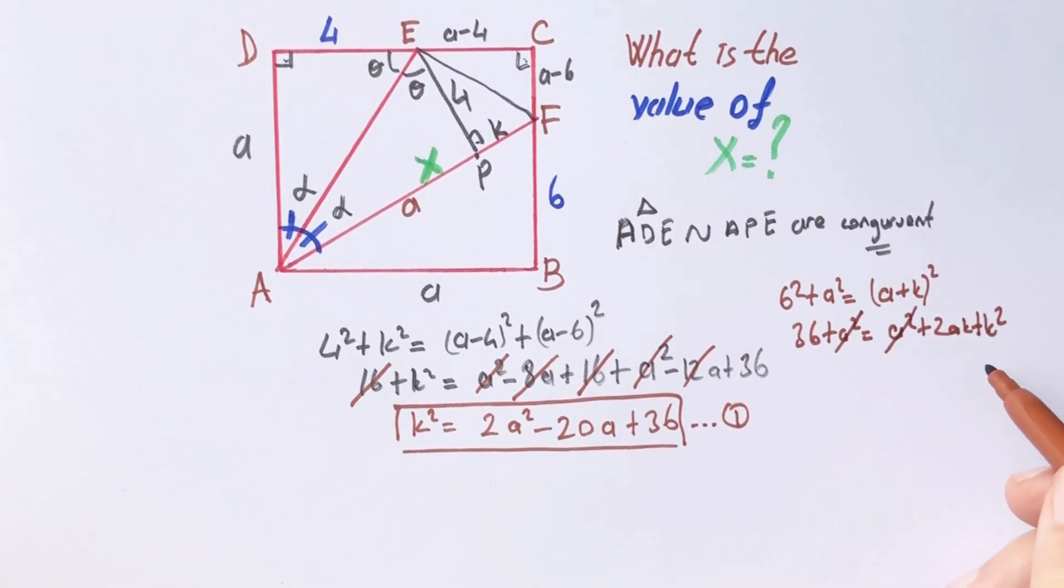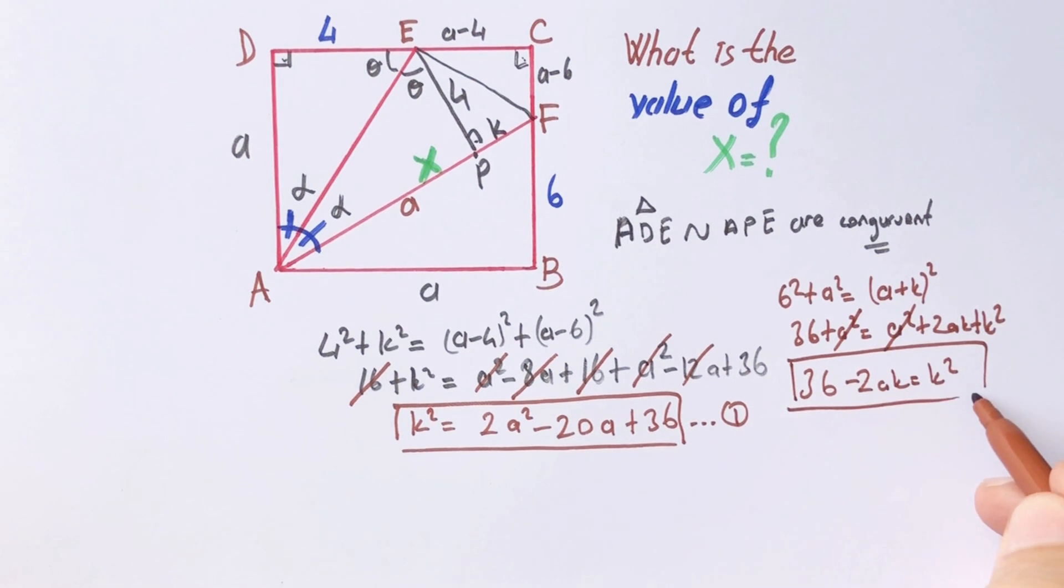A squared, they are gone. K squared equal 36 minus 2ak. This is the second equation. If we equalize these two equations, 2a squared minus 20a plus 36 equal 36 minus 2ak. These are gone.